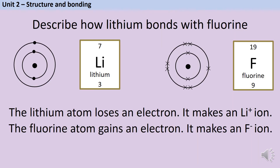Probably the trickiest kind of exam question about ionic bonding is an extended response question, which for four or five marks asks you to explain how two elements bond together. If we're lucky they might tell us it's ionic, but even if they don't, you can figure it out by looking at your periodic table and identifying that you've been given a metal and a non-metal.